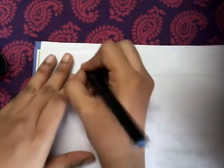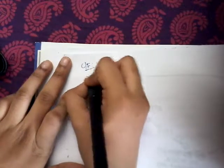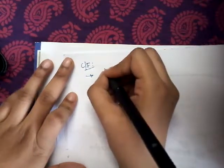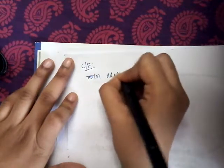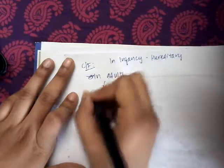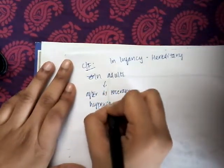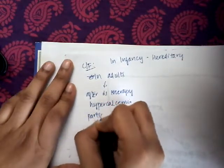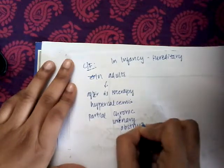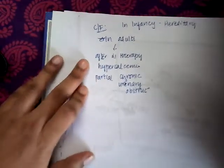The clinical features: this non-hereditary nephrogenic diabetes insipidus is acquired in adults. In infancy, as I have said, it is hereditary. In adults it can occur after lithium therapy, hypercalcemia, or partial chronic urinary obstruction. After these conditions there is a chance of getting nephrogenic diabetes insipidus because of damage to those receptors.